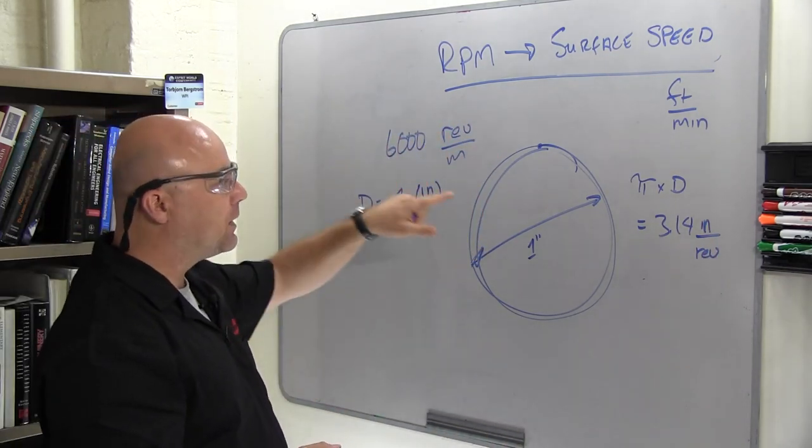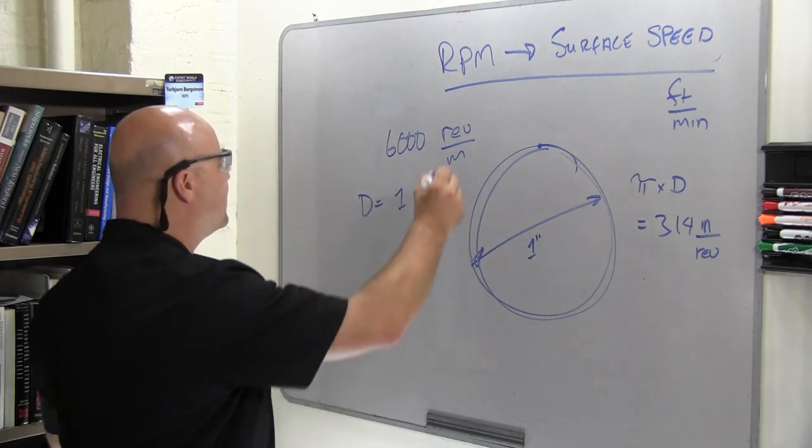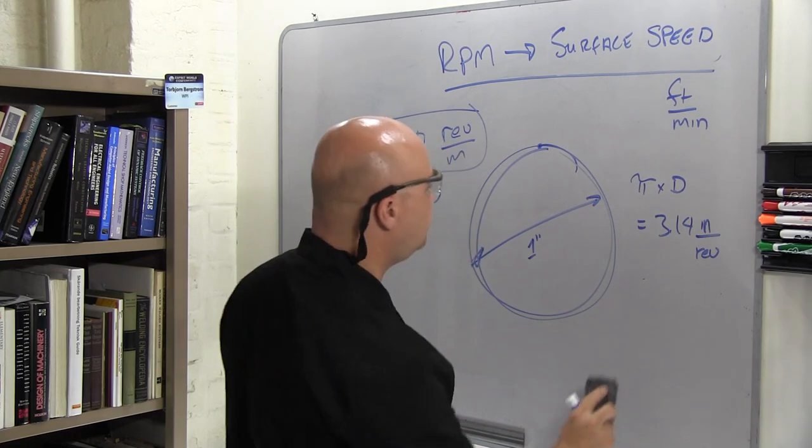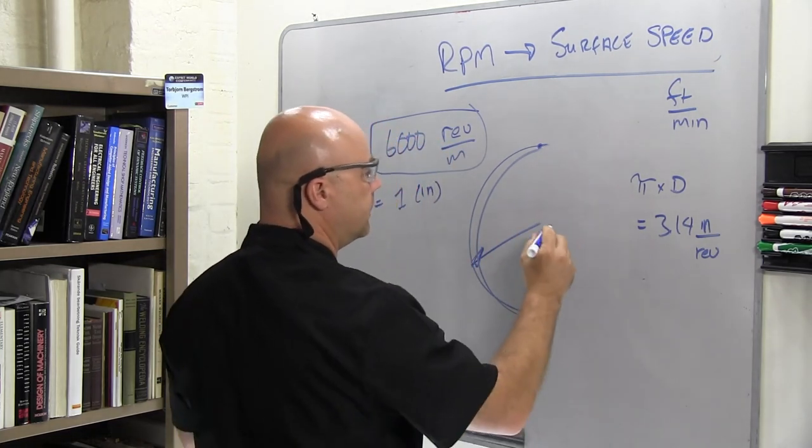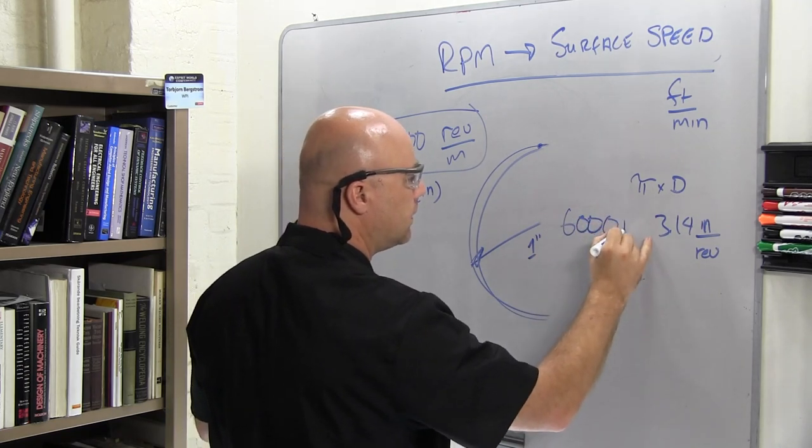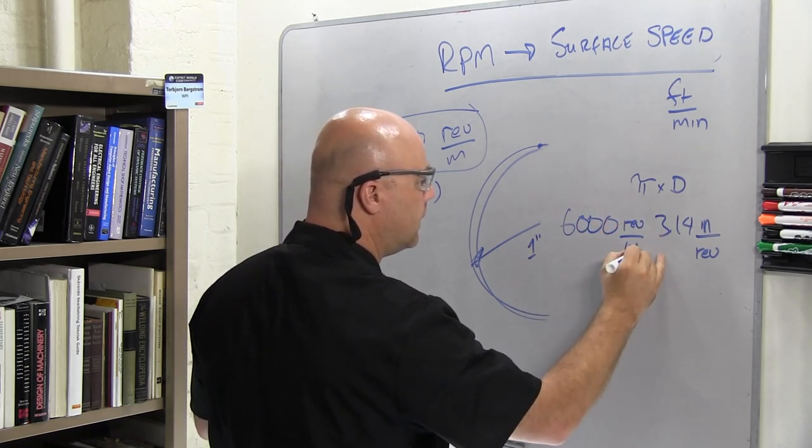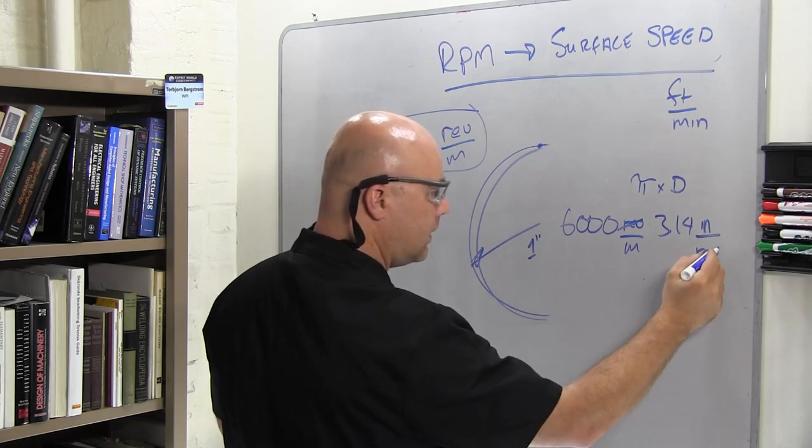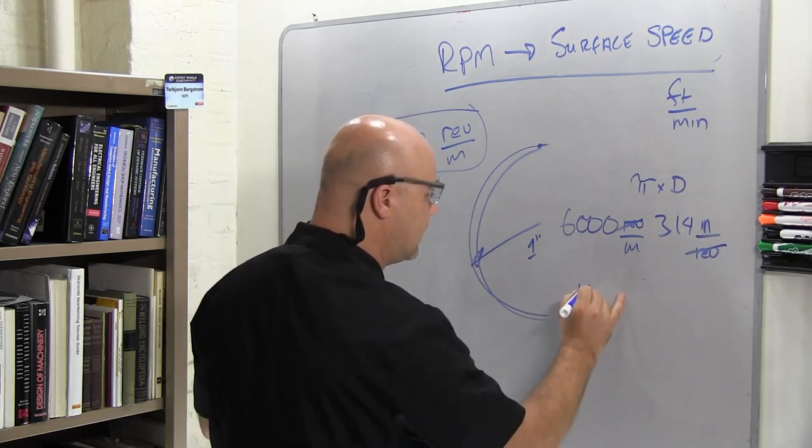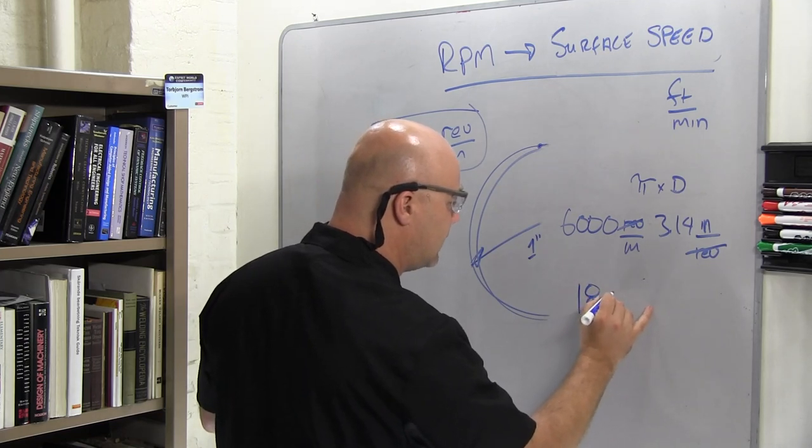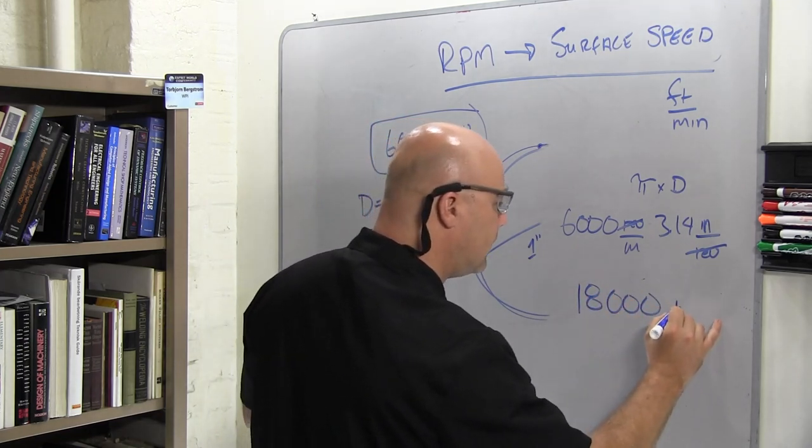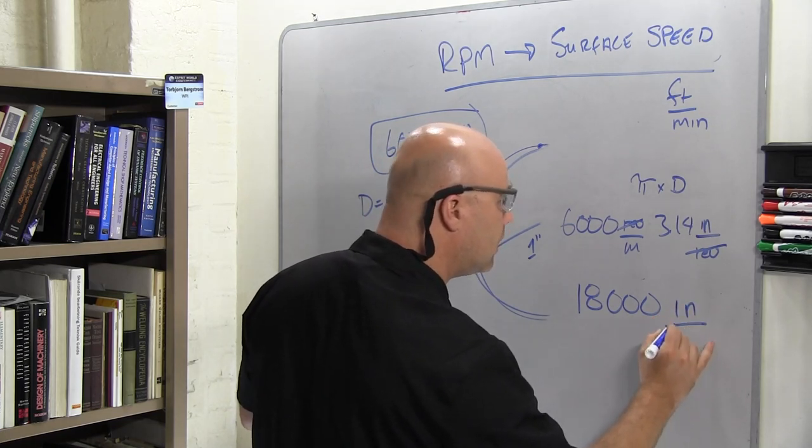Now I need to multiply that by my 6,000 revolutions per minute. If I do 6,000 rev per minute, now we get, the revolutions go away, 3 times 6 is about 18, so we get somewhere in the range of 18,000 inches per minute.